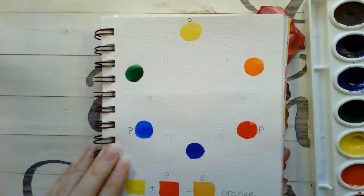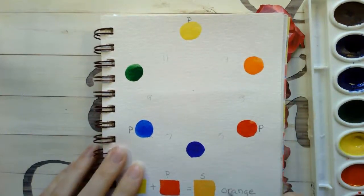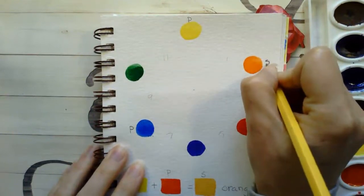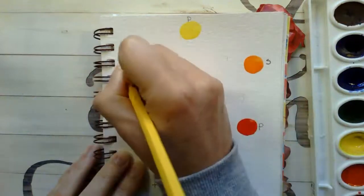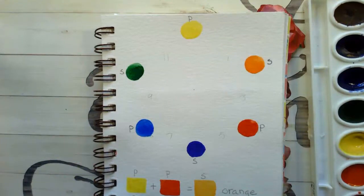Now, what we're going to do is mark our secondary colors with the letter S. So we have orange, violet, and green. They get a letter S. So we have our primaries and our secondaries.